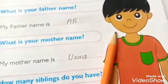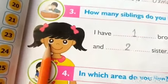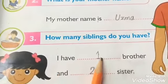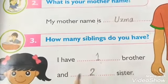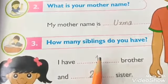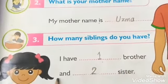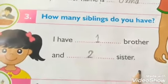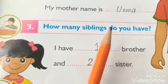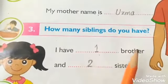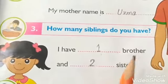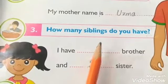Brother and sister. So the answer is: I have one brother and two sisters. It's my siblings — I have one brother and two sisters. And students, you will write your own siblings here.